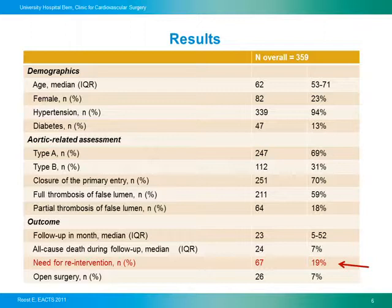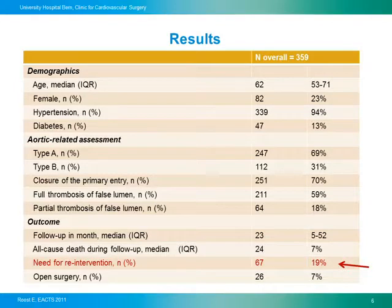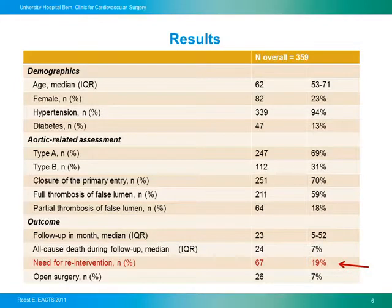At the time of discharge, the primary entry was closed in 70% of patients, and full thrombosis of the false lumen was seen in 60% of patients. The follow-up, which was on mean almost two years, showed an all-cause death rate of 7%, and the need for re-intervention was, for us, impressively high at 19%. In 7% of patients, an open thoracic abdominal repair had to be performed.